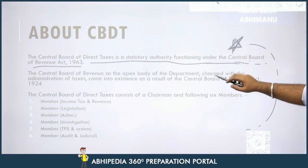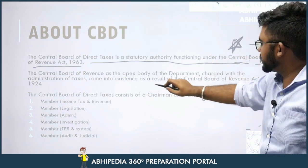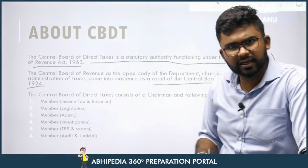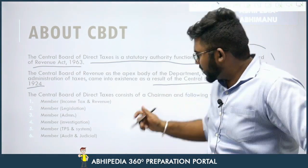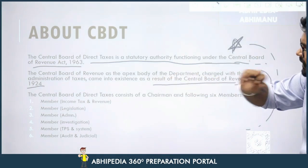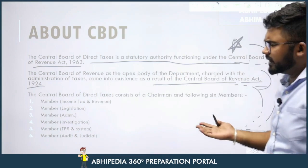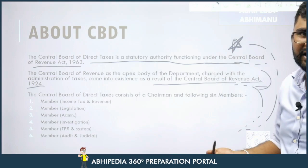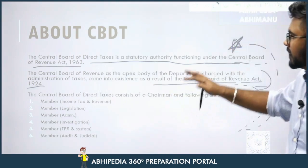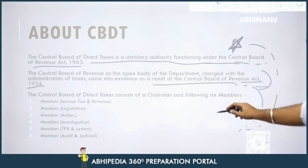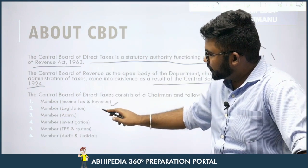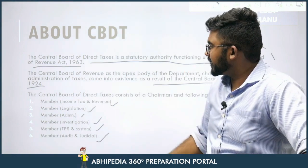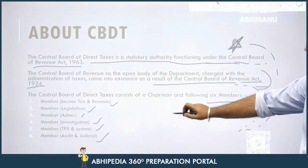The Central Board of Revenue, as the apex body of the department charged with the administration of taxes, came into existence as a result of the Central Board of Revenue Act, 1924. A historical question could be asked on this — the act year is 1924. The Central Board of Direct Taxes consists of a chairman and the following six members: Income Tax and Revenue, Legislation, Administration, Investigation, TPS and Systems, and Audit and Judicial. The head of the board is the Chairman.